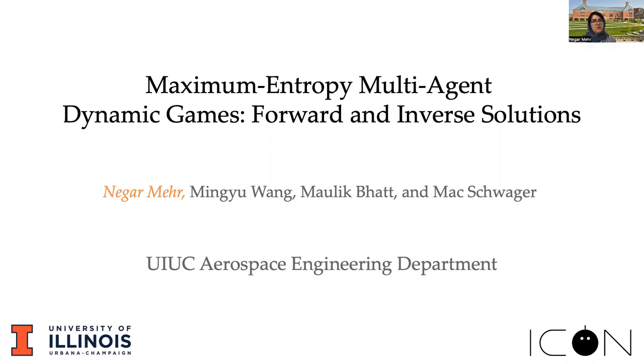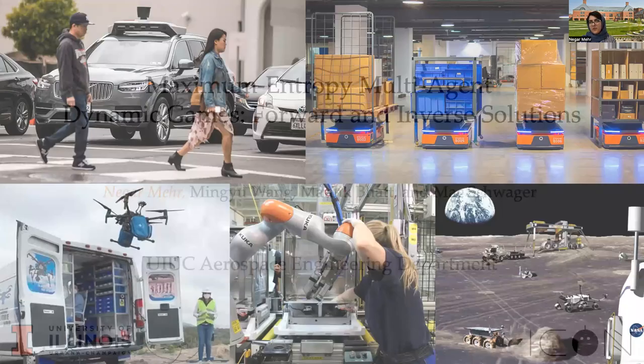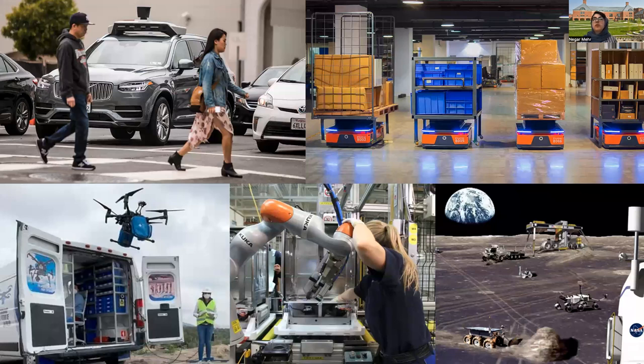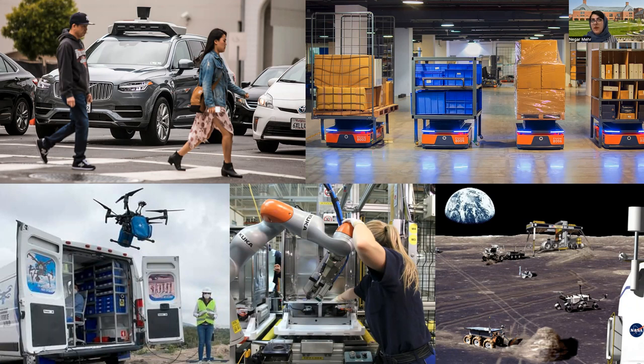In order for robotic systems to transform our lives, they'll soon have to interact with other agents. They may have to interact with other humans or other robotic systems around them.